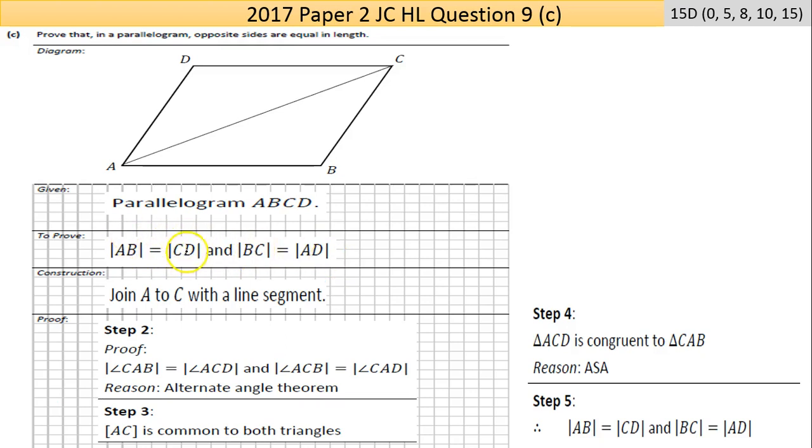So construction: we're joining A to C, making this diagonal. It's not the biggest proof in the world, but it is five steps. So in the proof, we're saying now what matters here is the letter in the middle. So the size of angle CAB - now CAB is this angle here - we're proving that angle equals angle ACD - that's the angle there. We're also proving the angle ACB...